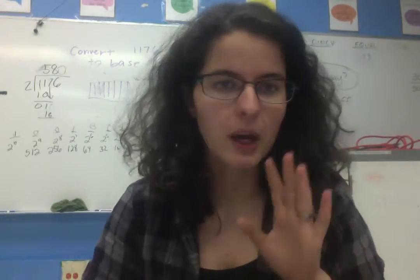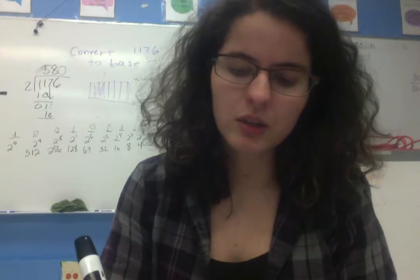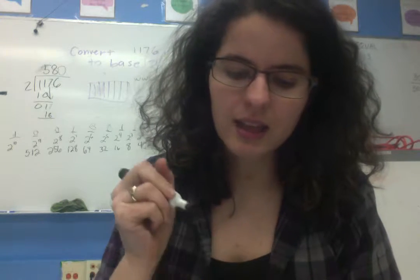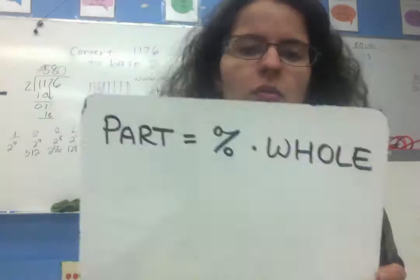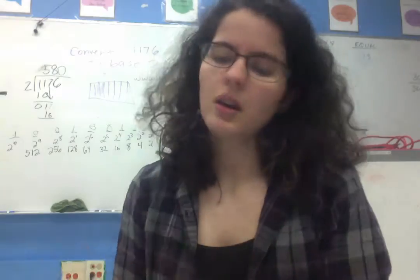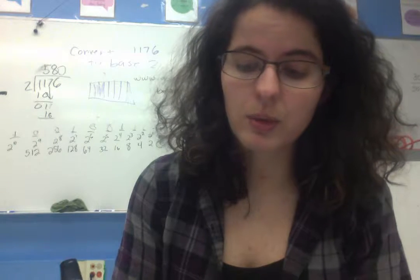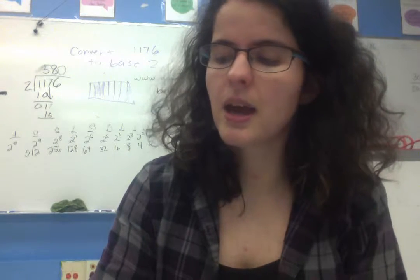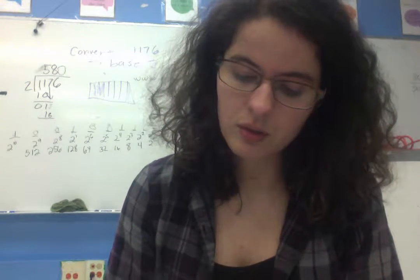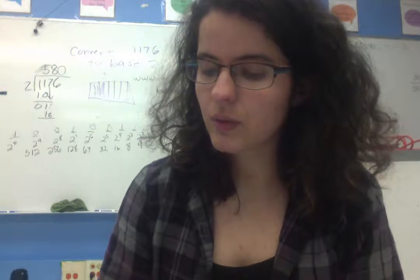But before we do that, a note on notation. On Tuesday, we developed an equation that let us say that the part was equal to the percent times the whole. We mostly saw that if, for example, the percent was 30%, then you were setting up a fraction. So instead of 30%, you could say 30 out of 100, which would also be equivalent to 3 tenths.